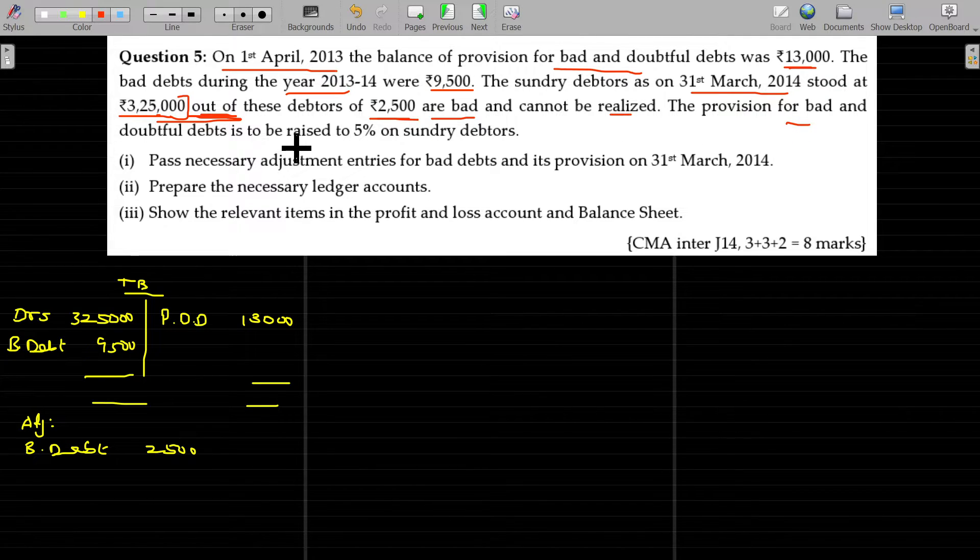The provision for bad and doubtful debt is to be raised to 5 percentage on sundry debtors. What we have to do? For the bad debt we have to pass transfer entry. For the bad debt given in the adjustment entry, we have to pass the adjustment entry and then transfer entry. These two transfers happen routed through the PDD account and this will be created.